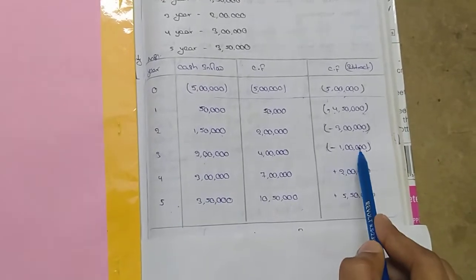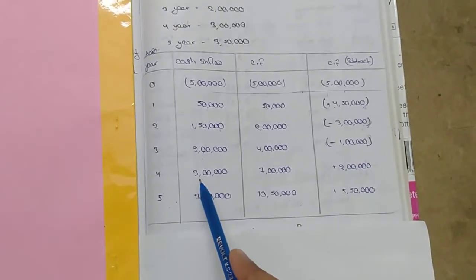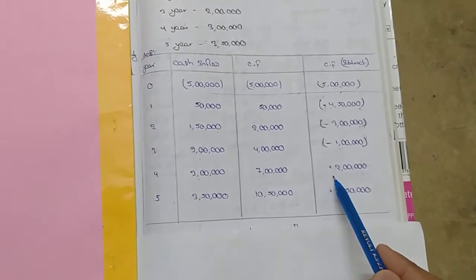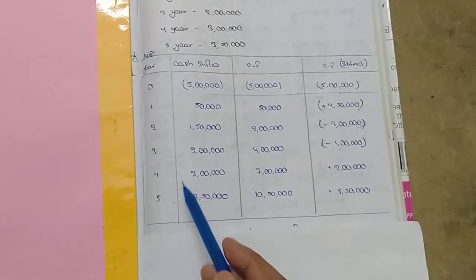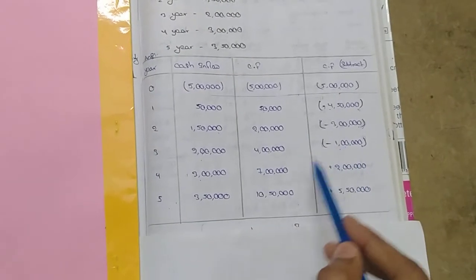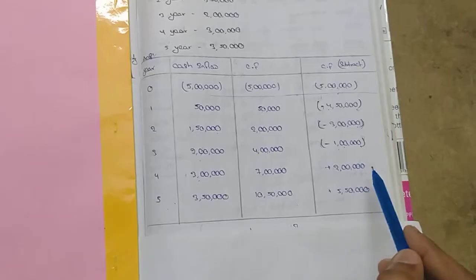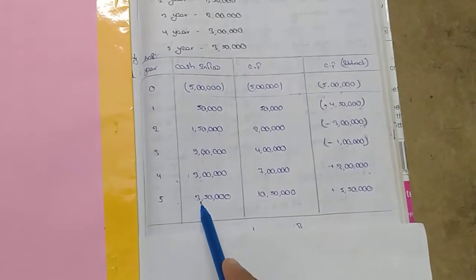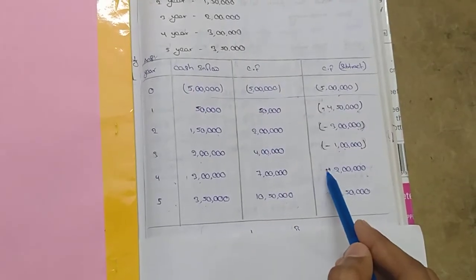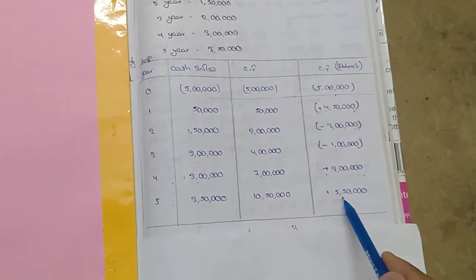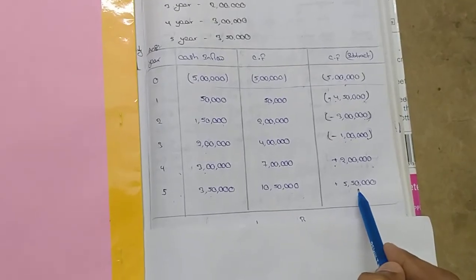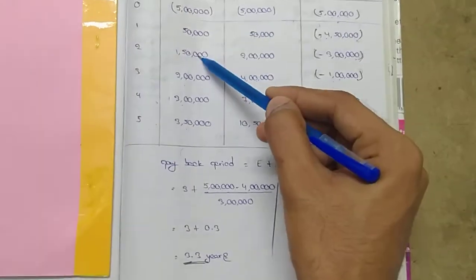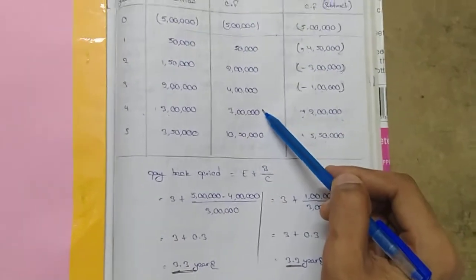Continuing: three lakhs minus one lakh equals plus two lakhs — this is positive. So at the fourth year the balance becomes positive. The fifth year cash inflow is three lakhs fifty thousand, making the cumulative total five lakhs fifty thousand, which is also positive. The table is now complete.